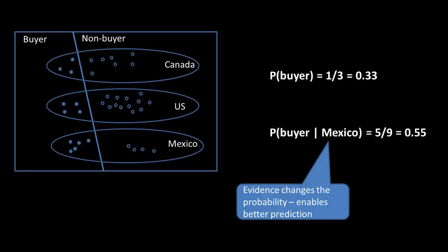If you're simply told I've got a random person, what's the probability of being a buyer? It's only 0.33. But the moment I add more predictor information, I say the country is Mexico, immediately I can get a more accurate value for the probability.